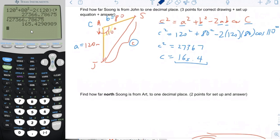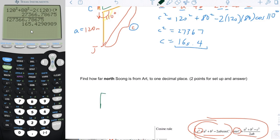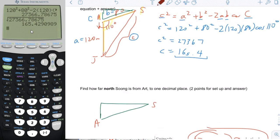And then it asks us, how far north Soong is from Art to one decimal place? And you might think, well, Soong is not north of Art. Soong is northeast of Art. Well, so what they're asking you actually, is they want you to draw some triangle, a right triangle here that shows the distance from Art to Soong.